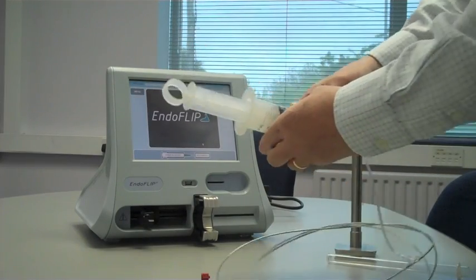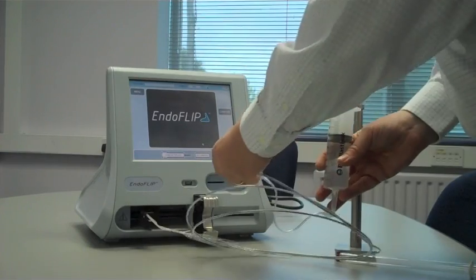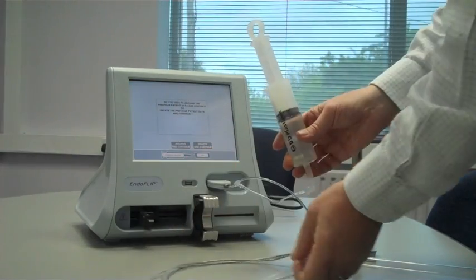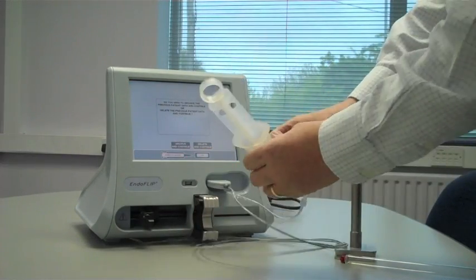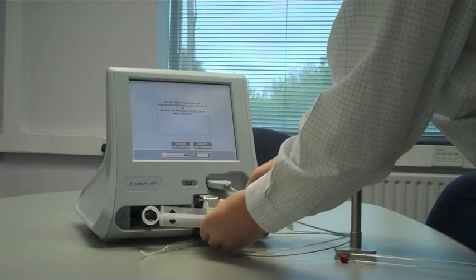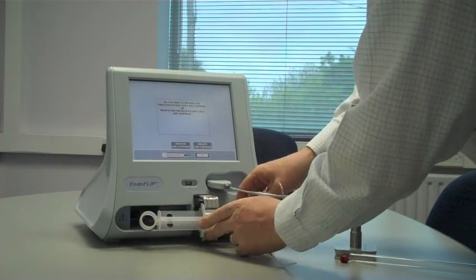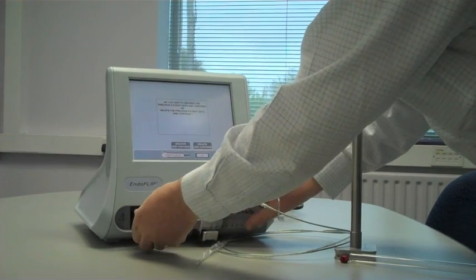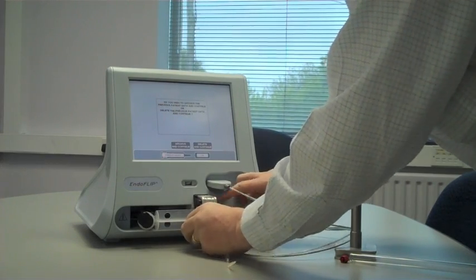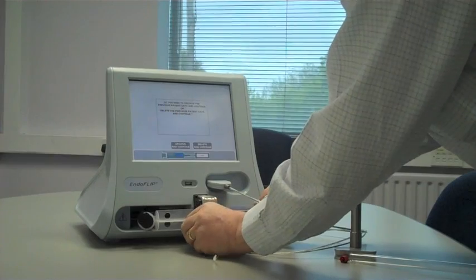So next what we're going to do is we're going to plug in the connector and then we are going to connect up the syringe. So the syringe slots in here and here in two places. You turn this lever here and slide this door over the syringe.